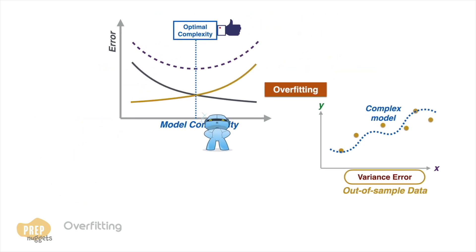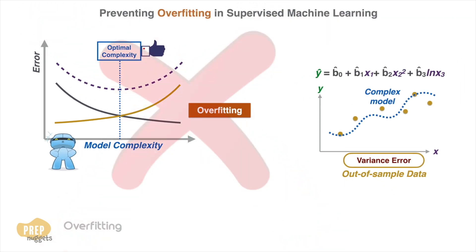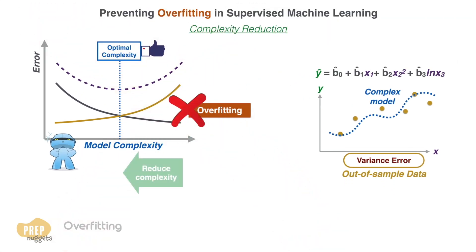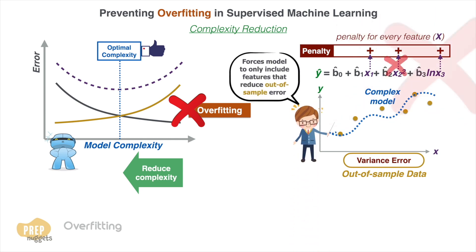One way to prevent the problem of overfitting is to reduce the complexity of the model. In complexity reduction, a penalty value is imposed for every feature used by the model, forcing the model to only include features that reduce the out-of-sample error.